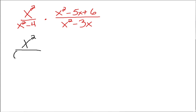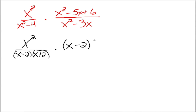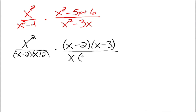But x squared minus 4 is the difference of two squares, so we can write that as x minus 2 times x plus 2. Then x squared minus 5x plus 6 — factors of 6 — factors into x minus 2 times x minus 3. If you need to refresh your memory on factoring trinomials, check out that other video. And then the denominator x squared minus 3x has two terms; factor out an x, and you're left with x times x minus 3.